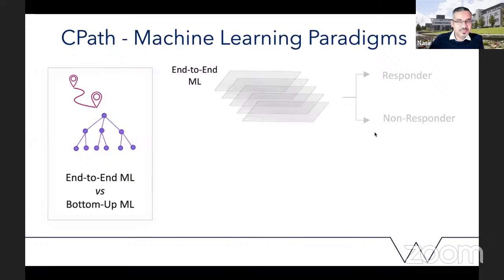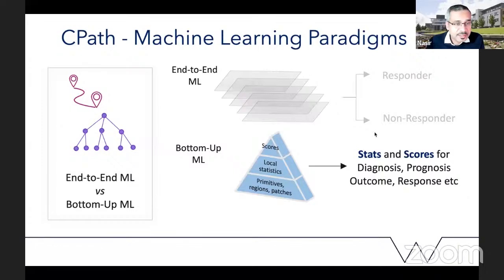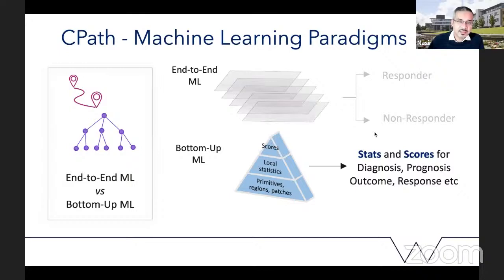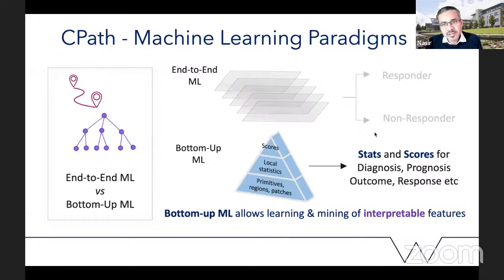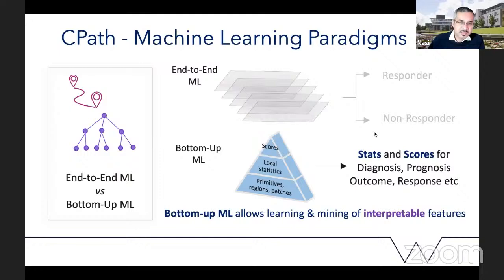We then build slide-level and case-level statistics and scores from those local statistics, for the purpose of diagnosis, prognosis, or prediction of outcome and response. This bottom-up approach allows learning and mining of interpretable features, which I think is pretty powerful. Increasingly there is a focus on developing AI that is interpretable.